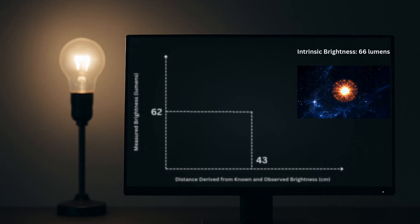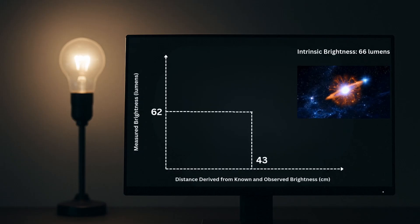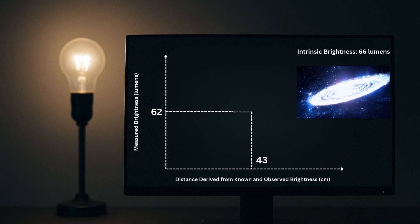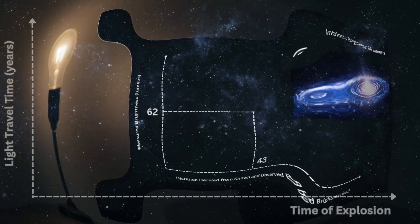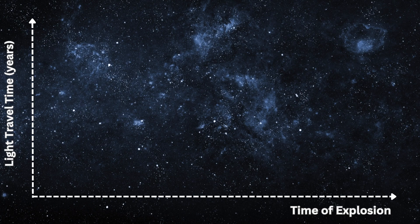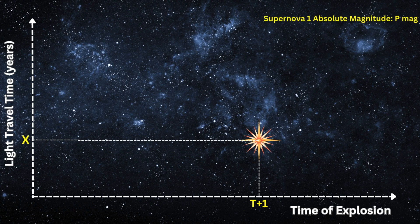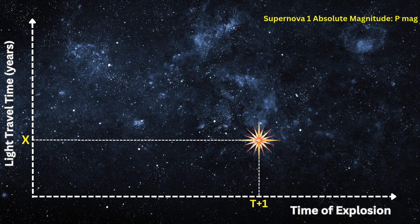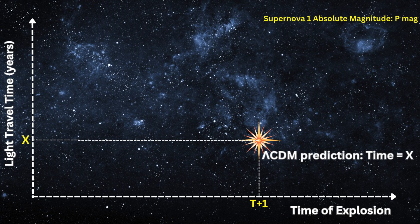Astronomers apply the same logic. By comparing the differences in brightness and arrival time of supernova light, they can determine how the expansion rate of the universe has changed over time. Let's say a Type Ia supernova with brightness p exploded at time t plus 1, and its light took x amount of time to reach us.